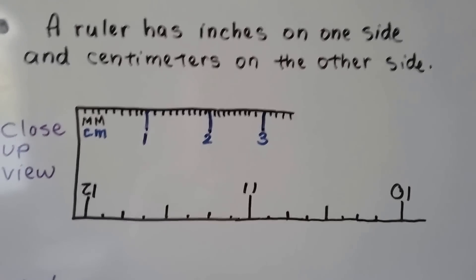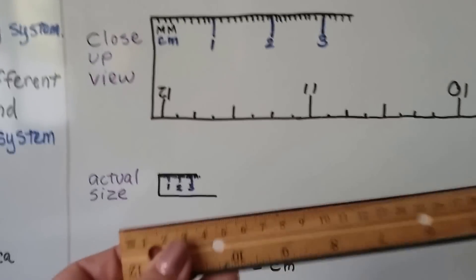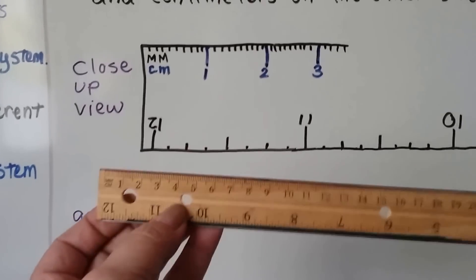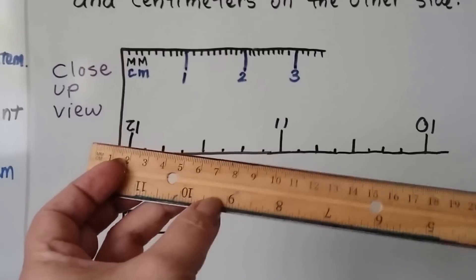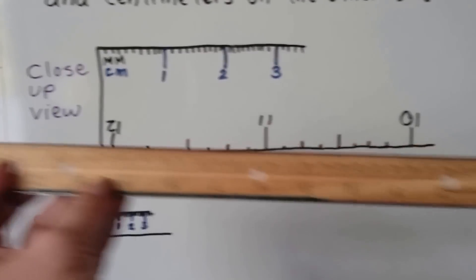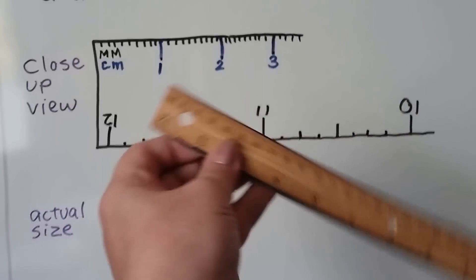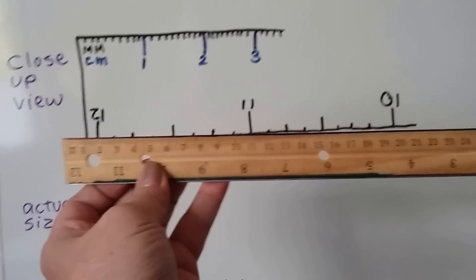If we look at our ruler here, you can see that the U.S. standard part looks upside down because it's on the other side. If we turn it over, there's our U.S. standard. We turn it over this way, and it's our metric.